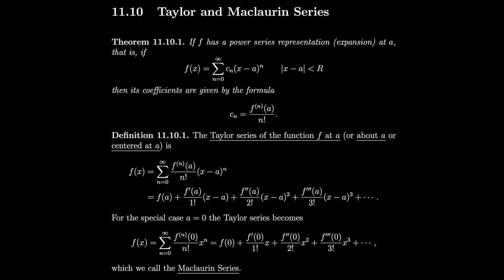Section 11.10: Taylor and McLaurin series. Previously we saw that if we have a function similar to 1 over 1 minus x, then we can use the series for 1 over 1 minus x, adapt slightly, and find a series for that function. However, in general we'd like to be able to find a power series representation for functions that are more dissimilar to 1 over 1 minus x.